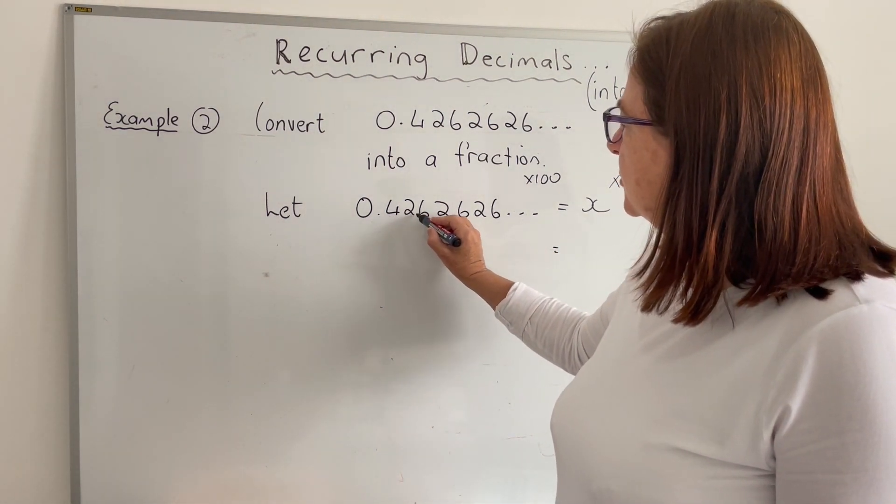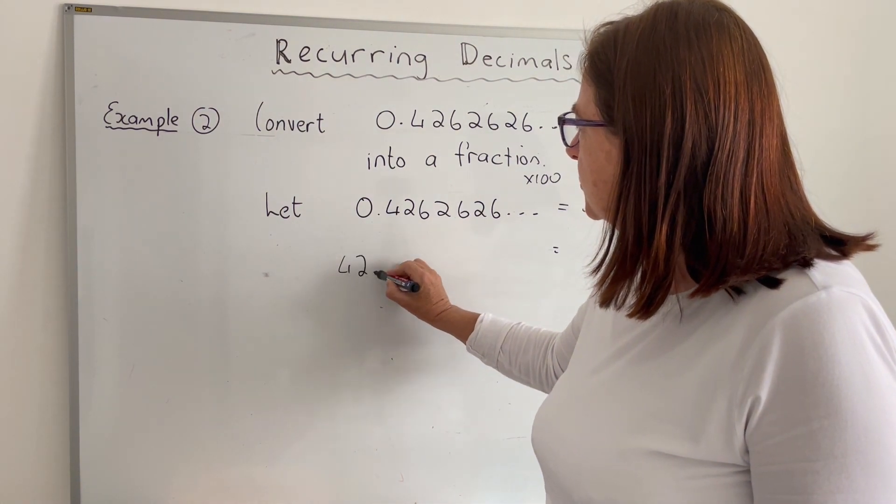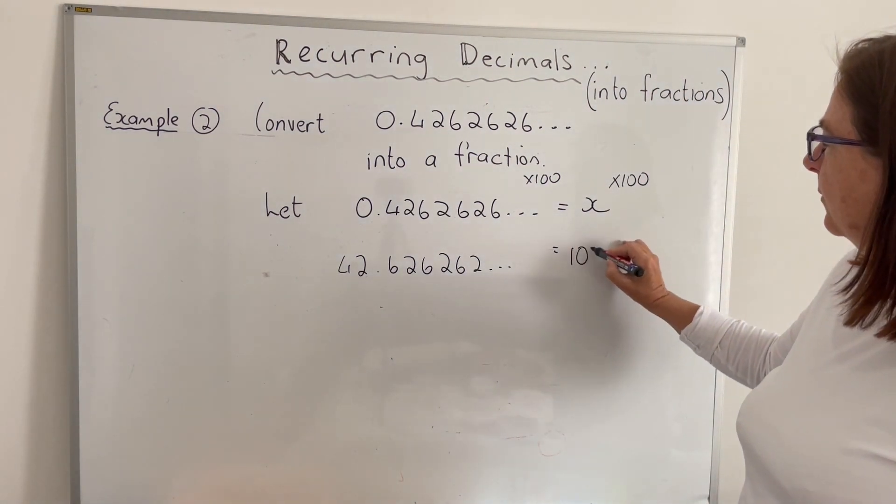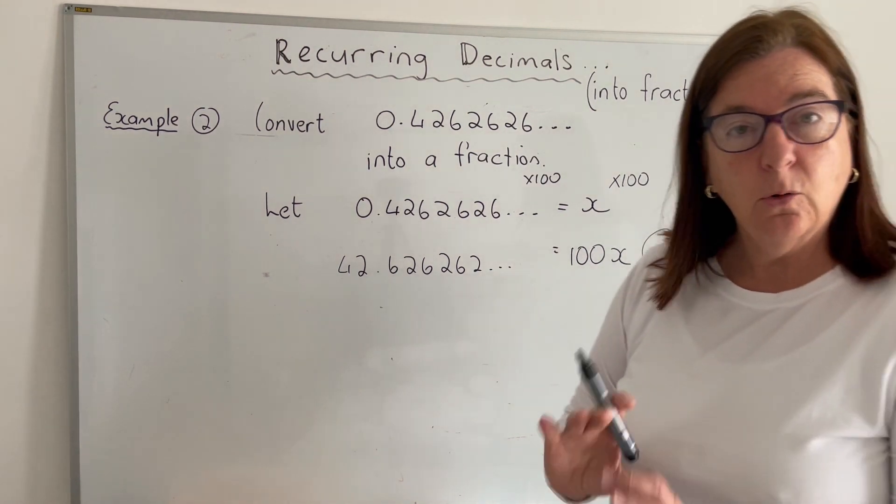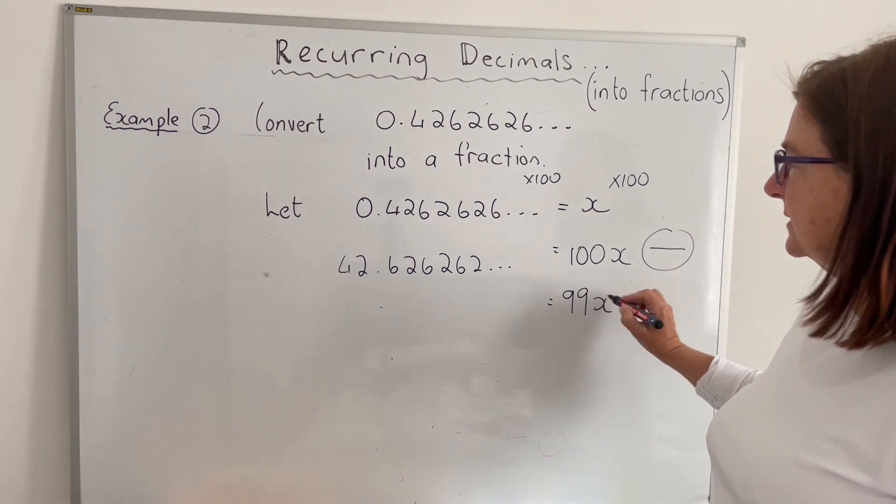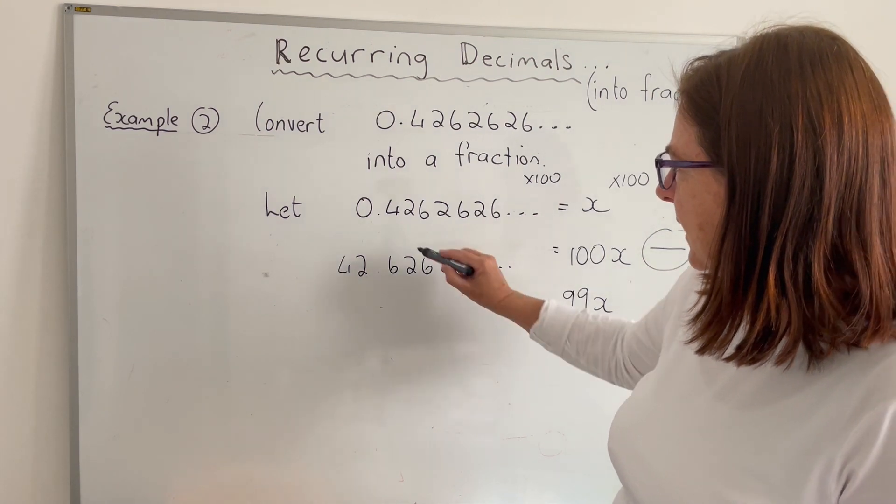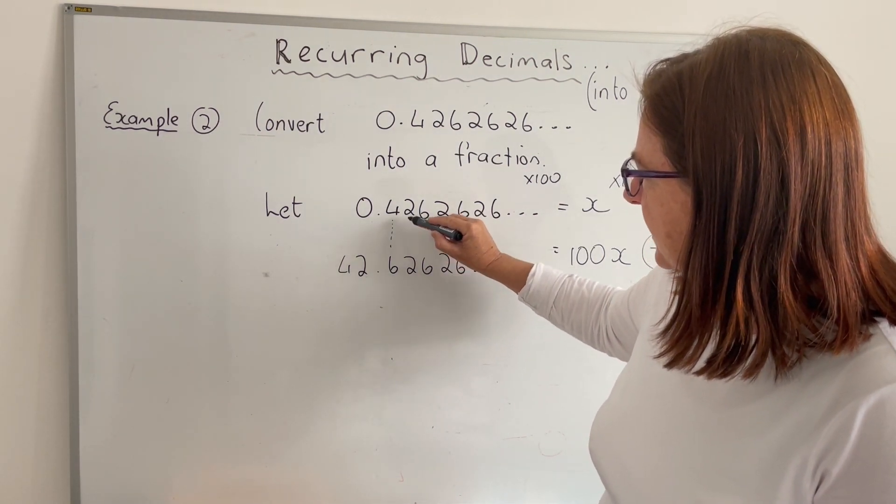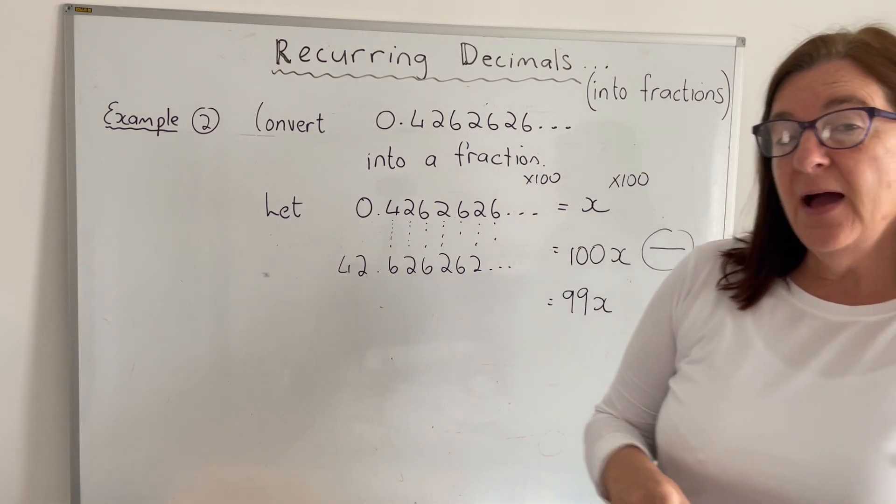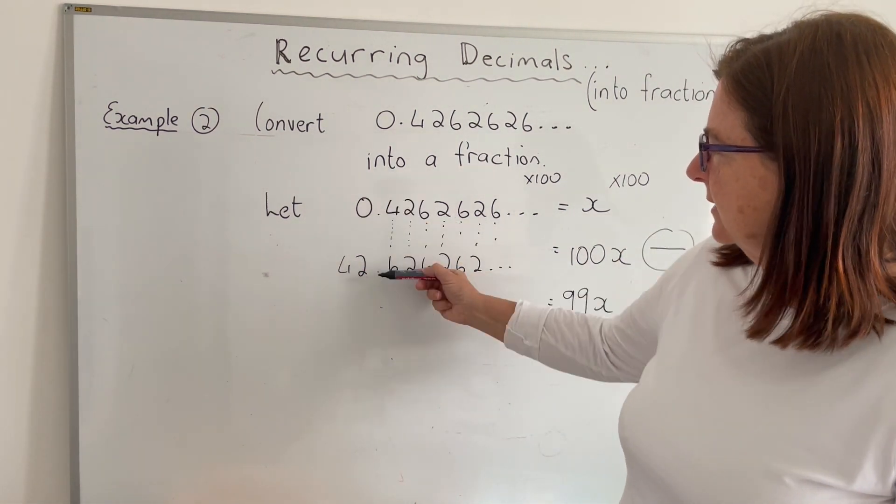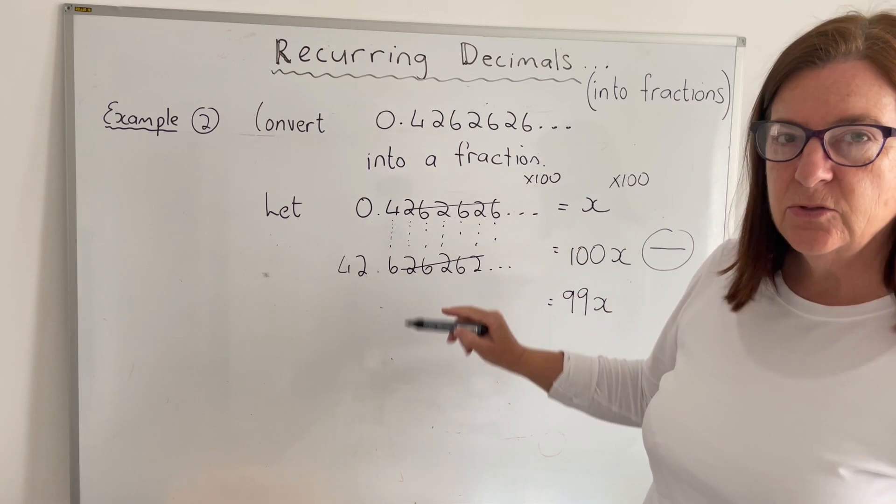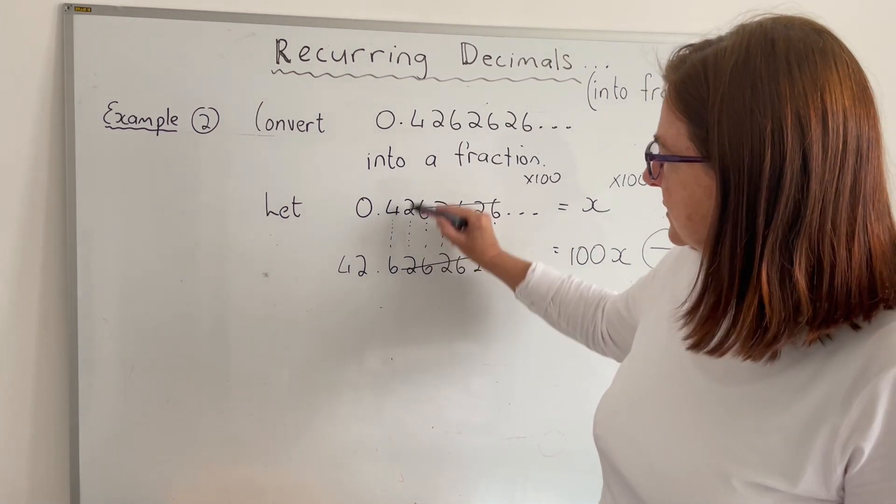What happens if we multiply both sides by 100? Decimal moves two places. So this is going to become 42.62626262 and this multiplied by 100 becomes 100x. Next step, subtract always. 100x minus 1x is going to be 99x. Let's see what happens on this side here. If I put these underneath each other and I want to subtract, we can see something interesting. Those decimals are all the same, so if I subtract, these here are all going to disappear. We are left with 6 minus 4 is going to be 2, 42 minus 0 is just 42.